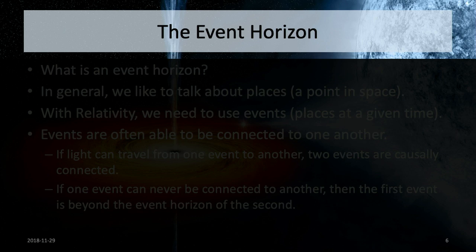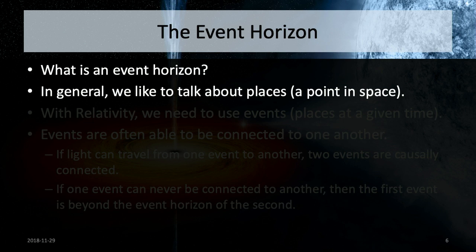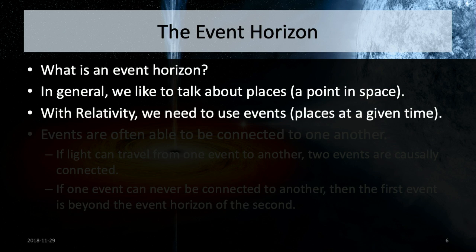Let's talk more about black holes themselves. One important thing to look at is the event horizon — a term that's often thrown about. It comes from a very specific set of definitions. In relativity, we talk about events: points in space combined with time. We use a term called events — just like we have an event here right now at the Rancho Mirage Library and Observatory at 7pm local proper time.